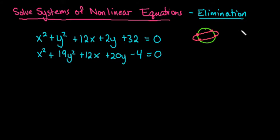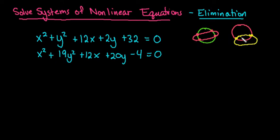It is possible to have only two solutions — imagine a circle and an ellipse that intersect at just two points. You could have one solution if they're just touching, or zero solutions if they don't touch at all. You could also have three solutions if one side is tangent while passing through elsewhere. But most of the time you have either four, two, or zero.